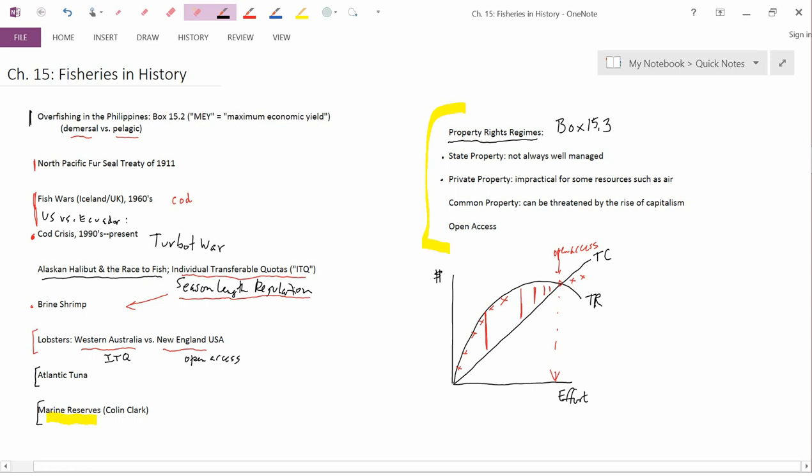The next topic is private property, which we've talked about a lot. Private property means a single firm owns everything. This is rare in ocean fisheries, although actually...